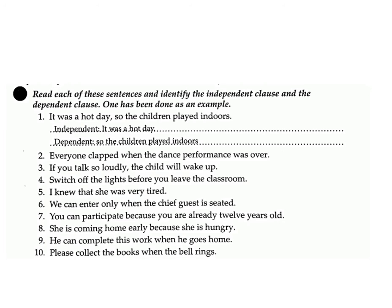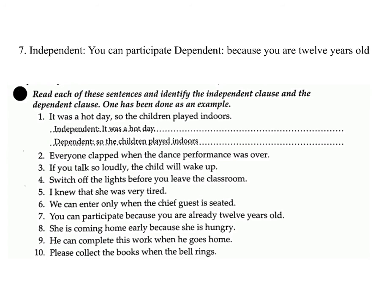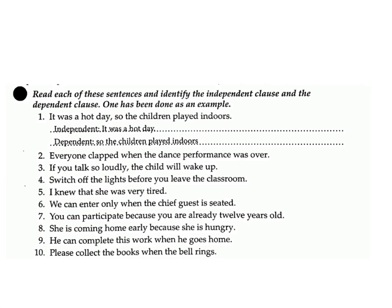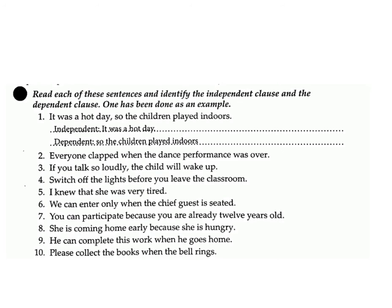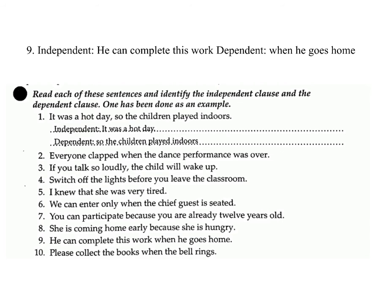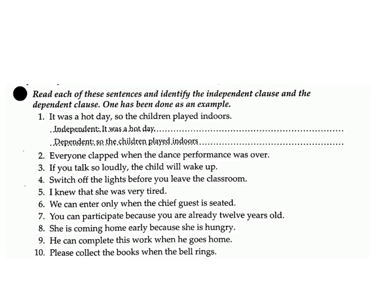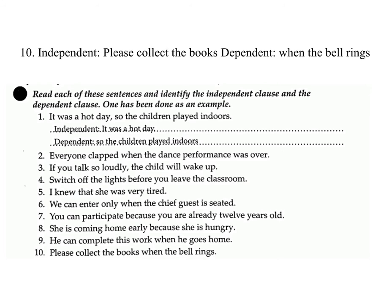7. 'You can participate because you are already 12 years old' — independent: 'you can participate'; dependent: 'because you are 12 years old.' 8. 'She is coming home early because she is hungry' — independent: 'she is coming home early'; dependent: 'because she is hungry.' 9. 'He can complete this work when he goes home' — independent: 'he can complete this work'; dependent: 'when he goes home.' 10. 'Please collect the books when the bell rings' — independent: 'please collect the books'; dependent: 'when the bell rings.'